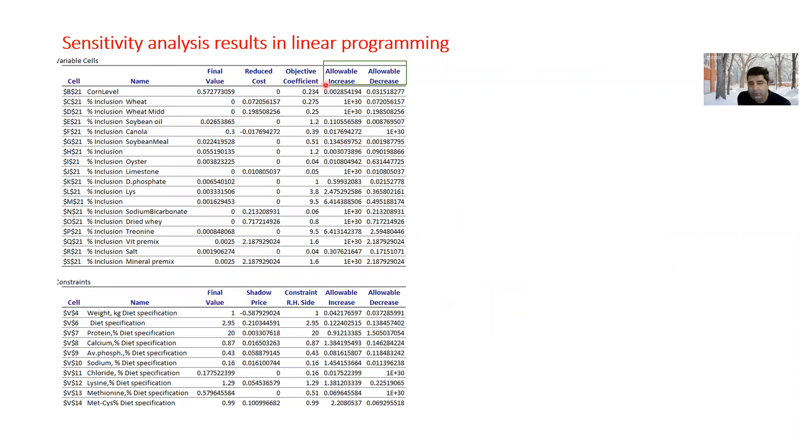The first thing you need to pay attention to is allowable increase and allowable decrease. For example, about corn, we can see allowable increase was 0.0028 and for the allowable decrease was 0.031. What does it mean?